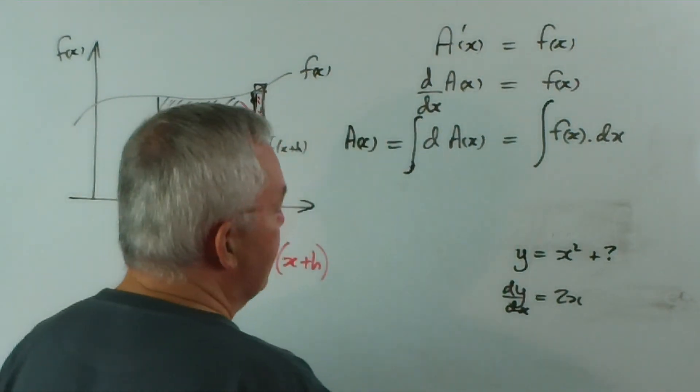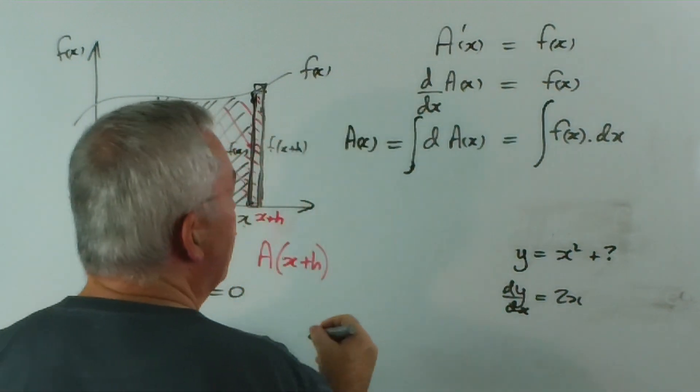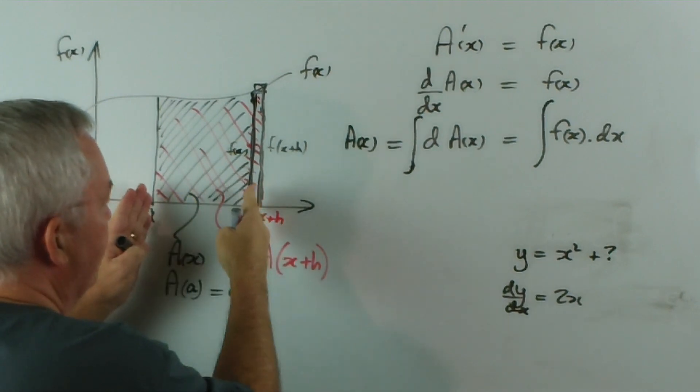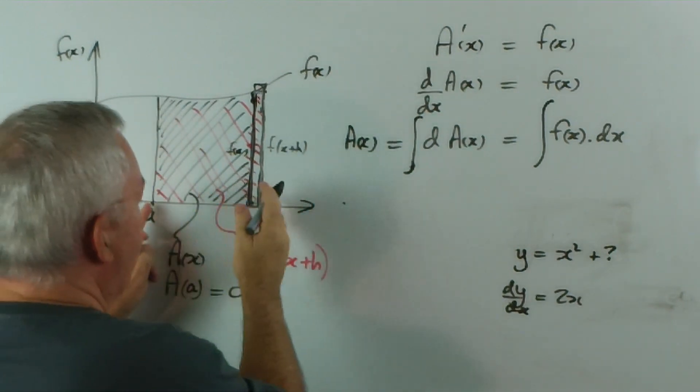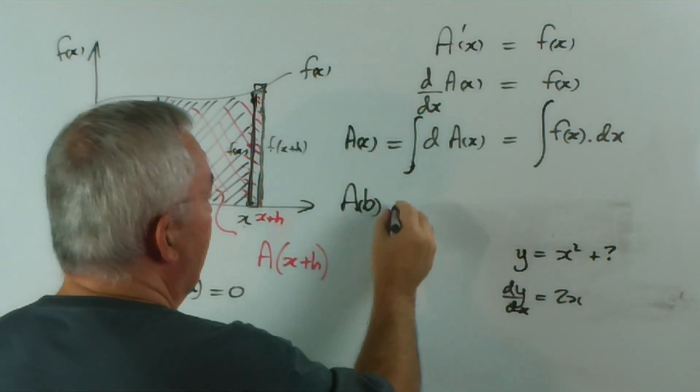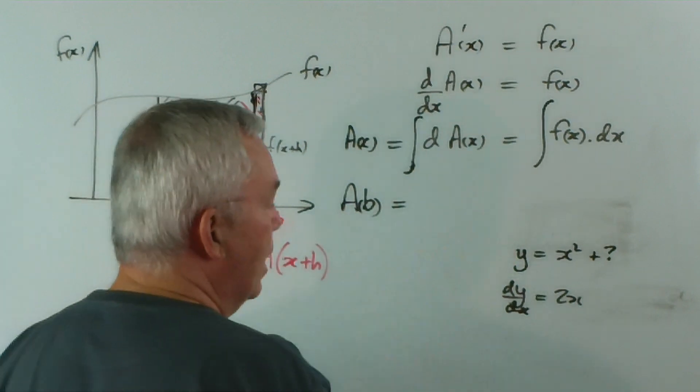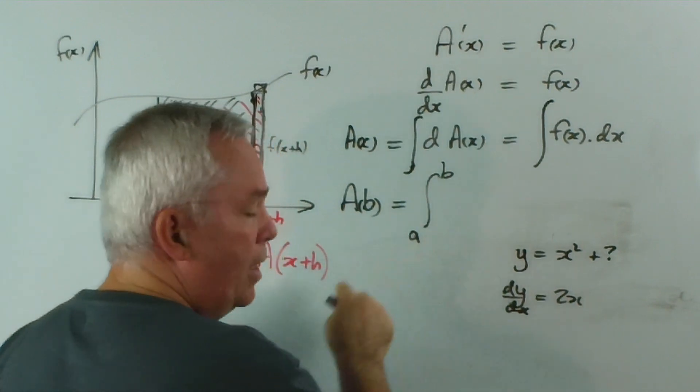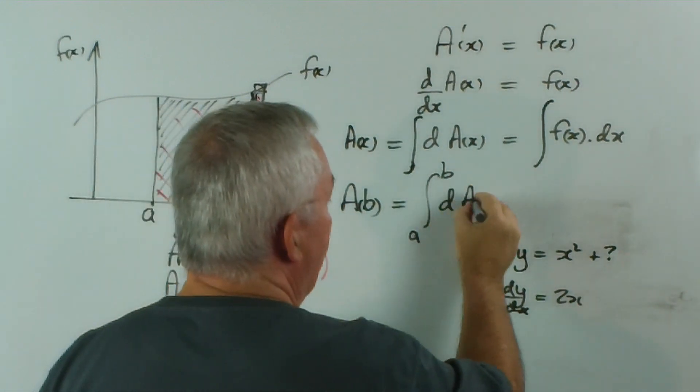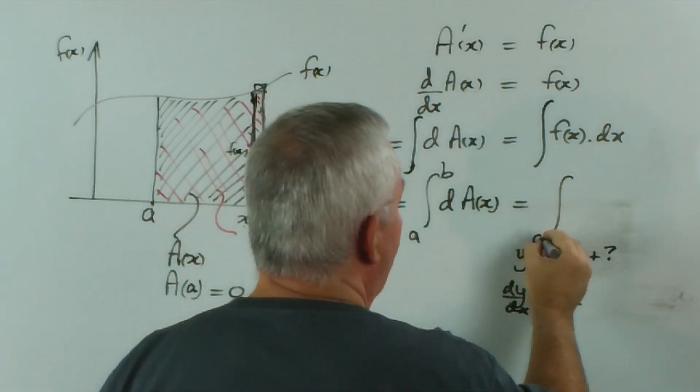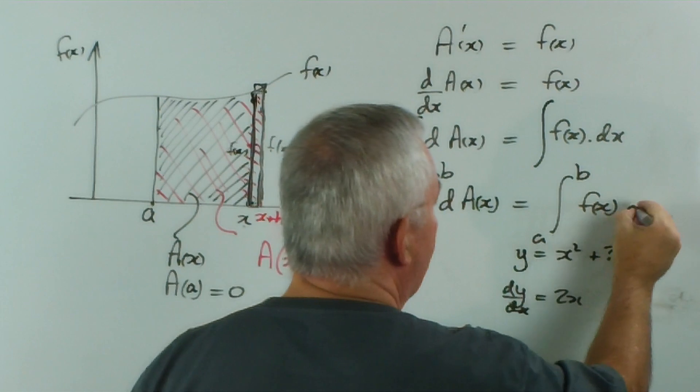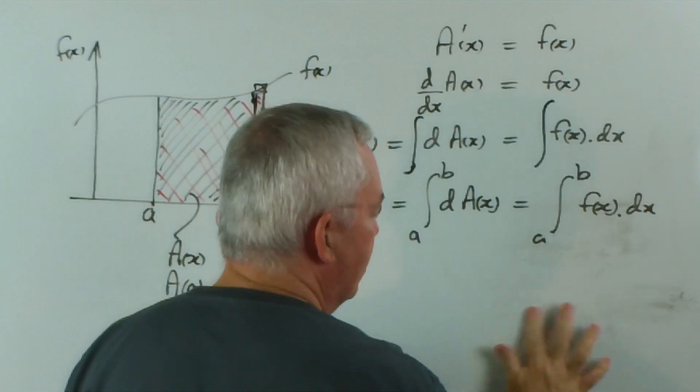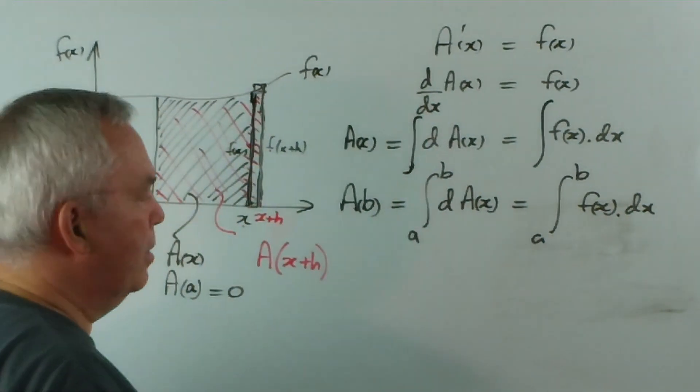So what we're going to do is say this. We know that this area function is the area from a up to x. Let's imagine we want to find the area from a up to b. The terminology that we write, based on Leibniz, is the area from a to b. Now, some people write the a on this side of the s. It doesn't matter. Or the integral of a to b of f dx. Pardon me for doing this. It probably doesn't make the board quite so clean, but it's a bit faster.